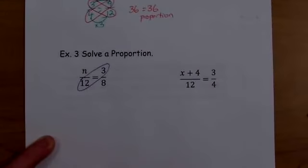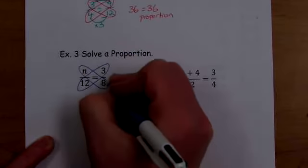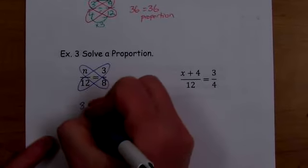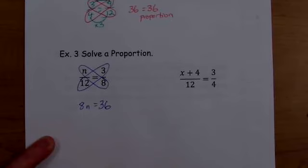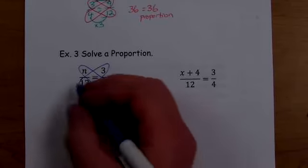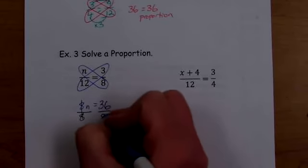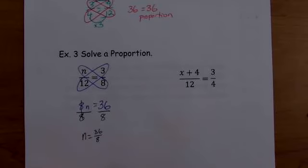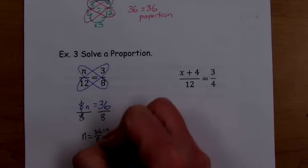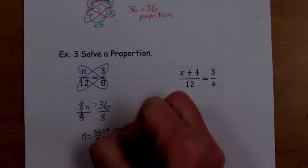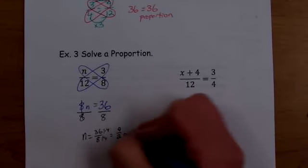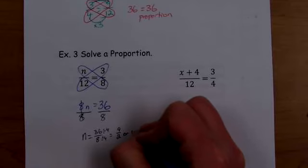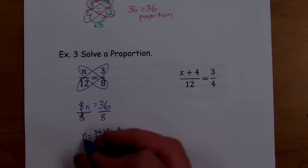So we're going to take three times 12, which is 36. And then I'm going to take eight times N. Well, eight times N is just 8N, right? Look what we have here. We now have an equation. We can figure out what this value of N is just by solving. Divide by eight. Divide by eight. N equals 36 over eight. I can simplify that. These are both divisible by four. And we get nine halves or four and one half. So N equals four and one half.